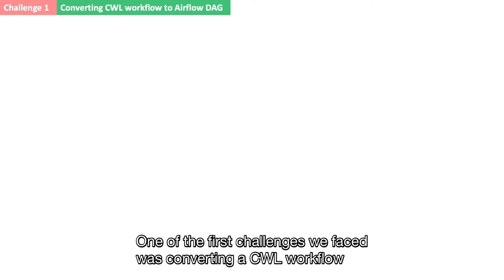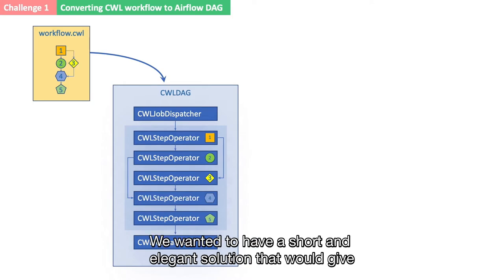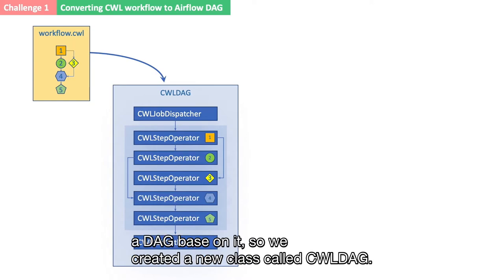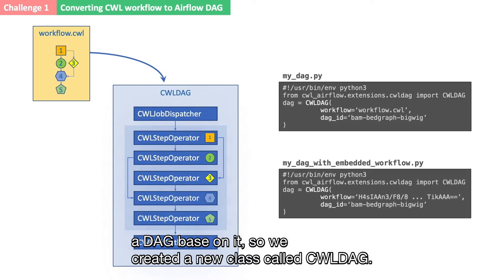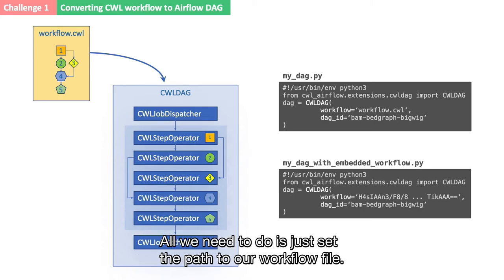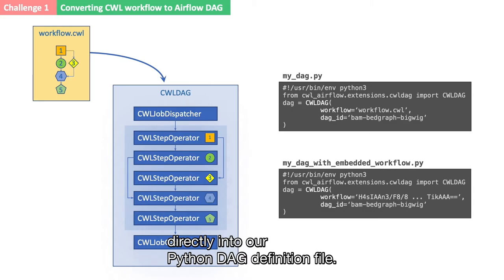One of the first challenges we faced was converting a CWL workflow to an Airflow DAG. We wanted to have a short and elegant solution that would give us convenient access to the CWL workflow structure to construct a DAG based on it. So we created a new class called CWL DAG. As you can see, adding a new DAG now only takes a few lines of code. All we need to do is just set the path to our workflow file. Alternatively, we can even embed the compressed workflow file content directly into our Python DAG definition file.